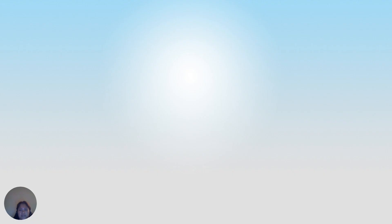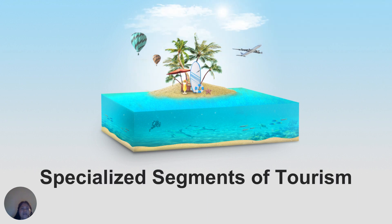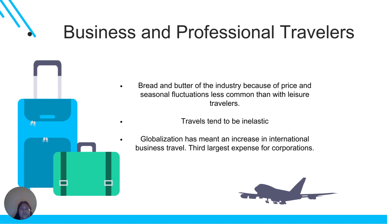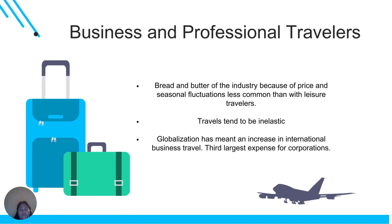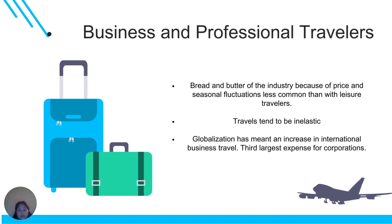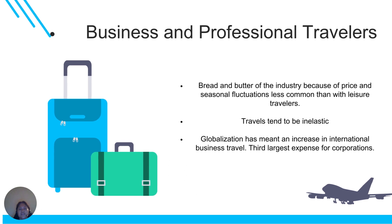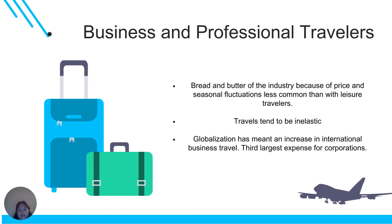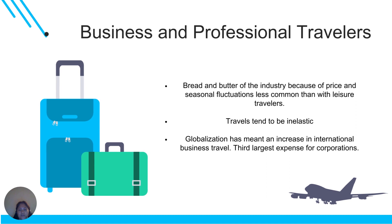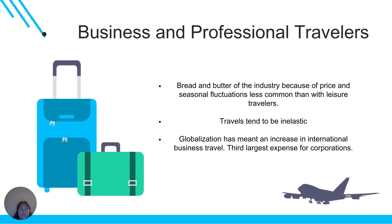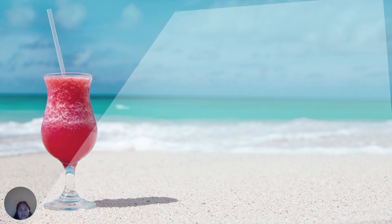In specialized segment tourism, we categorize them as business and professional travelers. They are the bread and butter of the industry because price and seasonal fluctuation are less common than with leisure travelers. Travel tends to be inelastic, and globalization has meant an increase in international business travel. This is considered the third largest expense for a corporation.